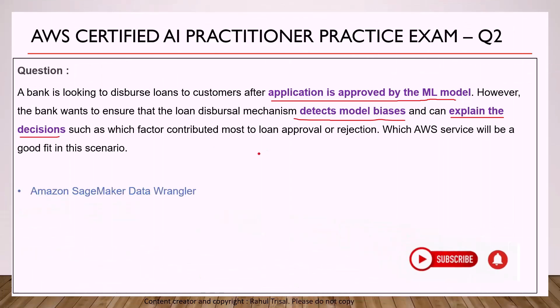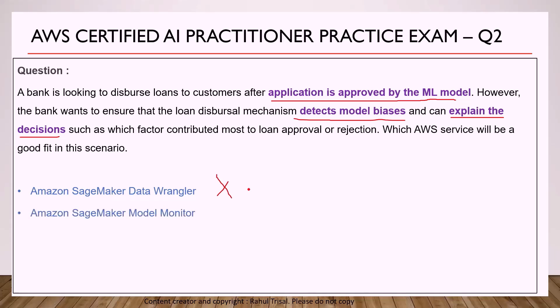Looking at the options — Amazon SageMaker Data Wrangler is mainly used for data pre-processing: ingesting data from different sources, cleansing, transforming, and exporting to a SageMaker Feature Store for model training. So this is not correct. Amazon SageMaker Model Monitor is used to monitor ML models in production, monitoring data quality and model performance, but it cannot detect bias or explain decisions. So that option is also not correct.